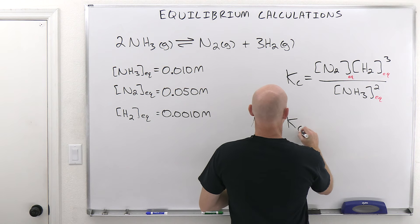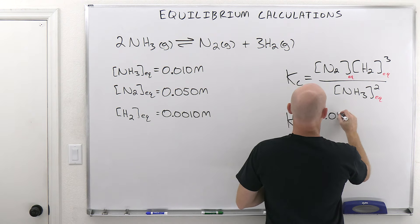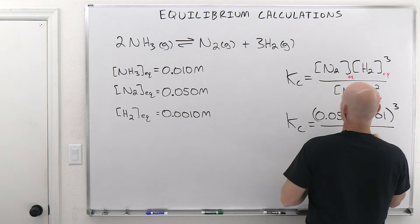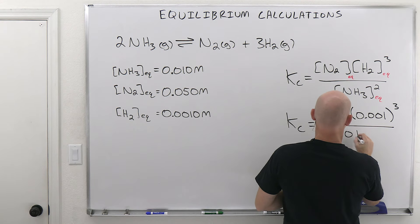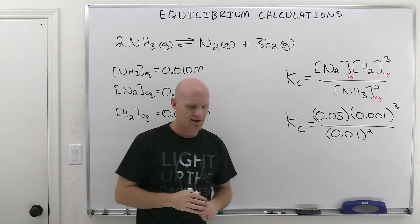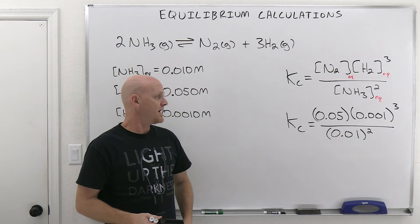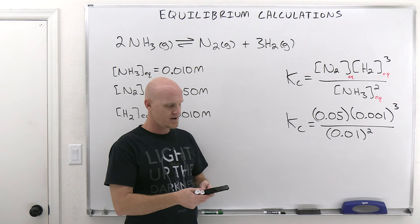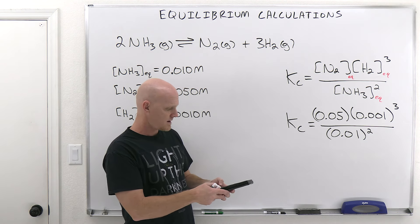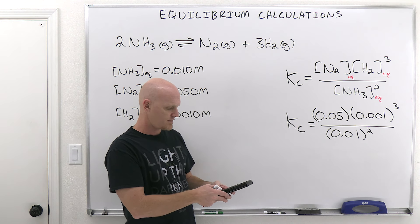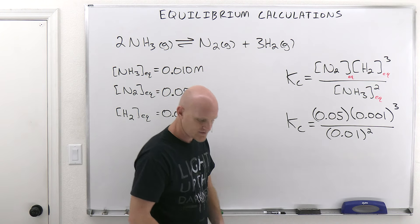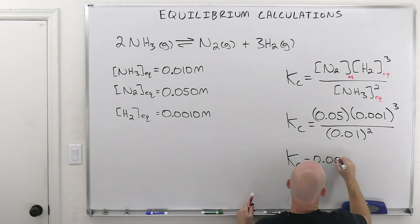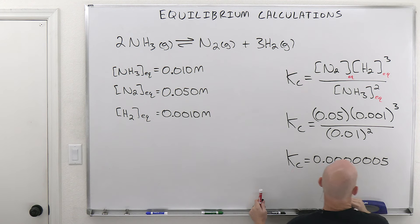From here, we're just going to plug and chug. So Kc is going to equal the concentration of N2 — 0.05 — times the concentration of H2 — 0.001 cubed — all over 0.01 squared. So 0.05 times 0.001 cubed, divided by 0.01 squared, equals 5 times 10 to the negative 7. We really had two sig figs in all these values.